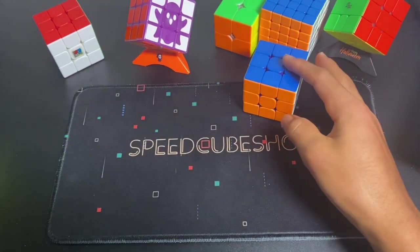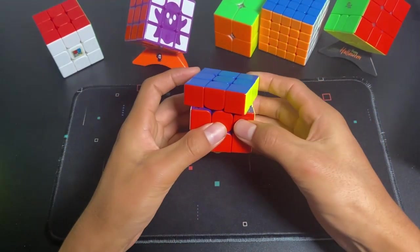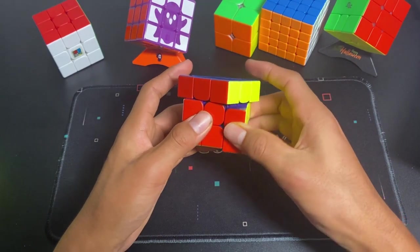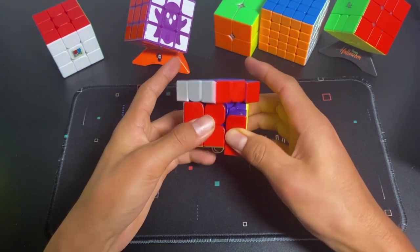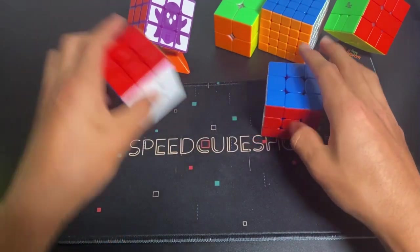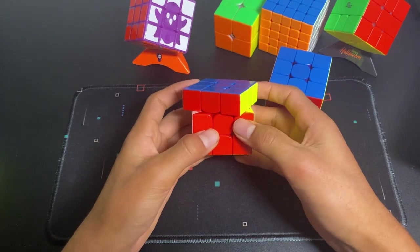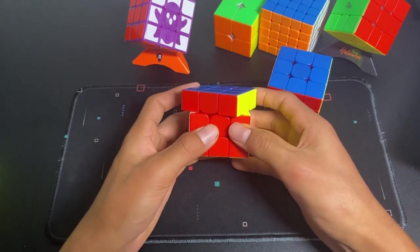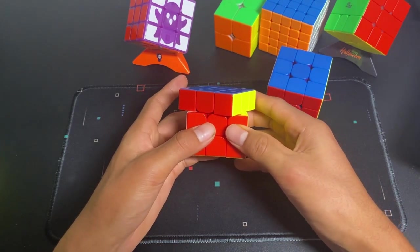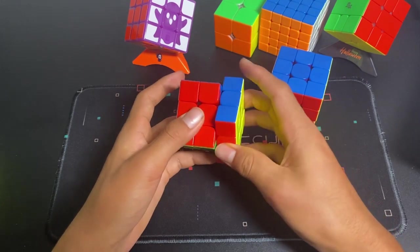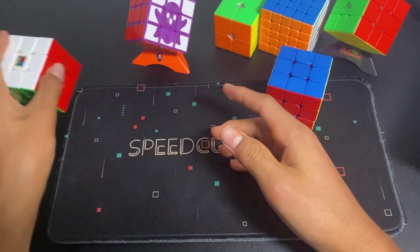If you want to have a good cube, such as the Moyu WRM Maglev, which has very good reverse corner cutting and can go line-to-line regular corner cutting. There's also the RS3M 2020, which has extremely good corner cutting and is only $9 from speedcubeshop.com. And there are some other choices.